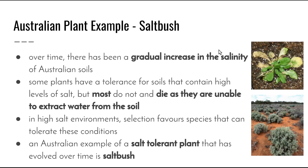With changes from a wetter to a drier environment, the amount of salt found in Australian soils has also increased. This causes a range of issues for plant species, the most negative being dehydration, as plants are unable to extract the water they need from the soil. A number of plants have evolved to tolerate these changes in salinity, and one Australian plant that has adapted to changes in soil salt concentration is the saltbush, which grows in both desert and coastal regions.